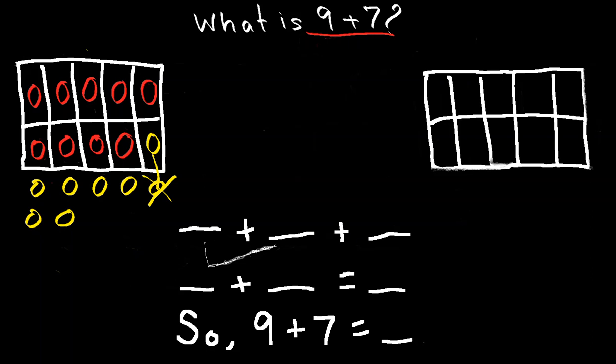So let me go over this again. We have the 9 circles that we added into the 10 frame. 9 plus the one yellow circle we moved in, that's 9 plus 1 equals 10. And then we have to figure out how many are on the outside. 1, 2, 3, 4, 5, 6. We had 6 left over on the outside.